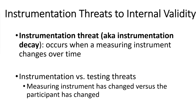Next we have instrumentation threats, also called instrumentation decay. This happens when your measuring instrument changes over time. Maybe the people doing the measurements of your behavioral data — your scorers — adjust. If we think about the campers who were not given sugar, maybe after a whole week of being around these campers, the counselor just got used to them being rowdy and didn't view their behavior as rowdy anymore just because they habituated to it. In this case, the behavior didn't necessarily change — our measurement changed.